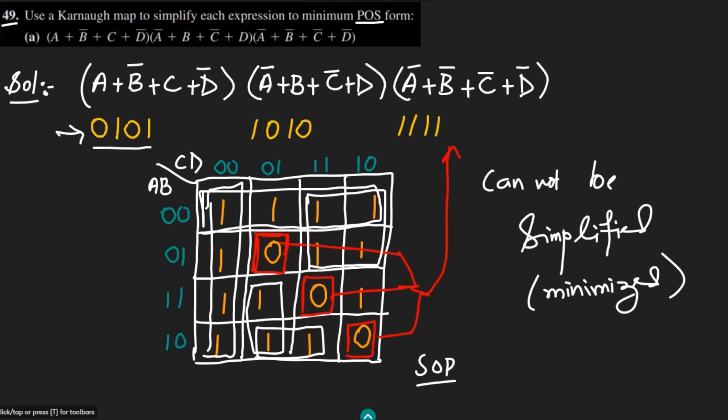But the simplified product of the sum forms cannot be found out from this expression which we have. That is the solution of part A of our question 49 and I hope you have grasped all the concepts which are behind the Karnaugh map building for the 4 variables and writing the binary values for them.